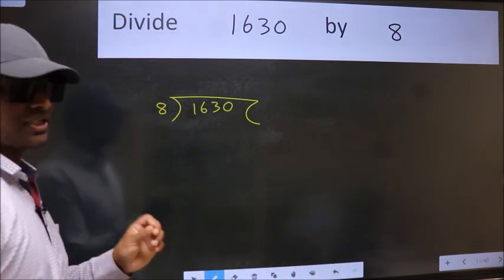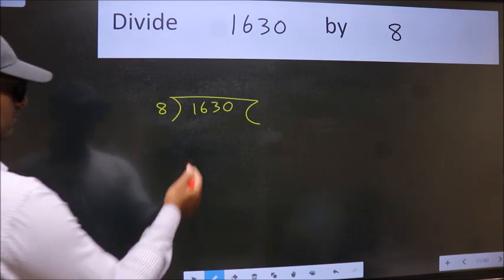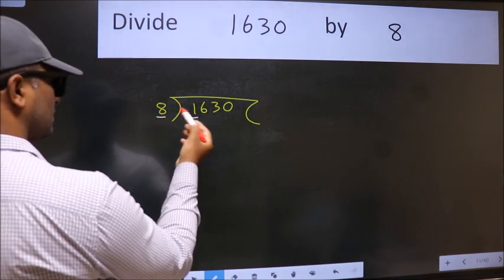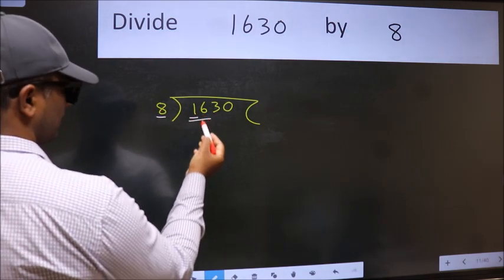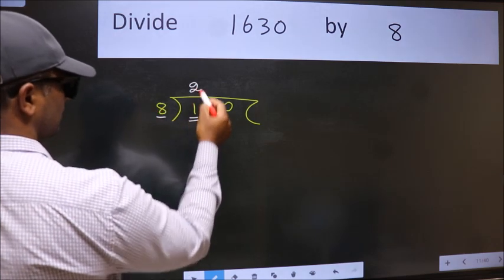This is your step 1. Next. Here we have 1 and here 8. 1 is smaller than 8, so take 2 numbers: 16. When do we get 16 in the 8 table? 8 times 2 is 16.